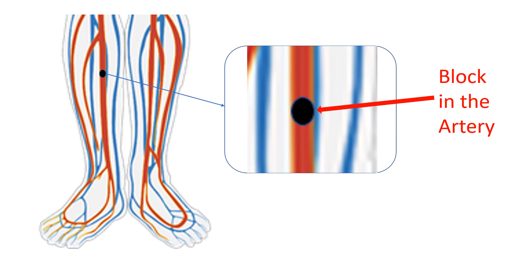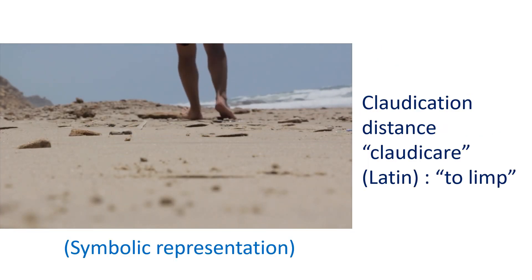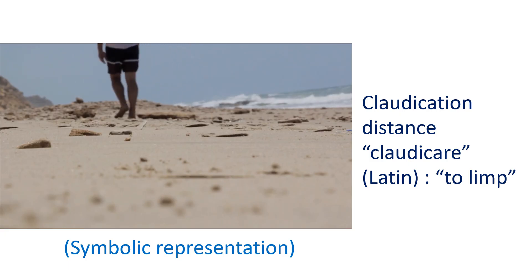This pain subsides with rest and recurs on walking. The distance at which pain starts is an important indication of the severity of obstruction. More severe obstructions produce pain after walking only a short while. Claudication distance can improve in the long run when the leg develops its own collateral blood vessels, a process that can be enhanced by a graduated exercise program and medications.